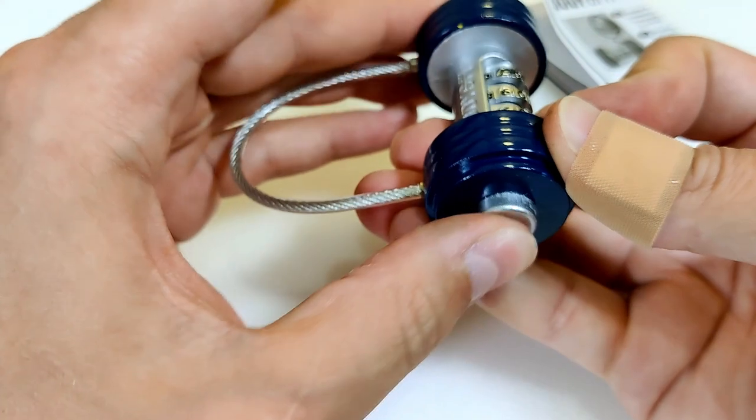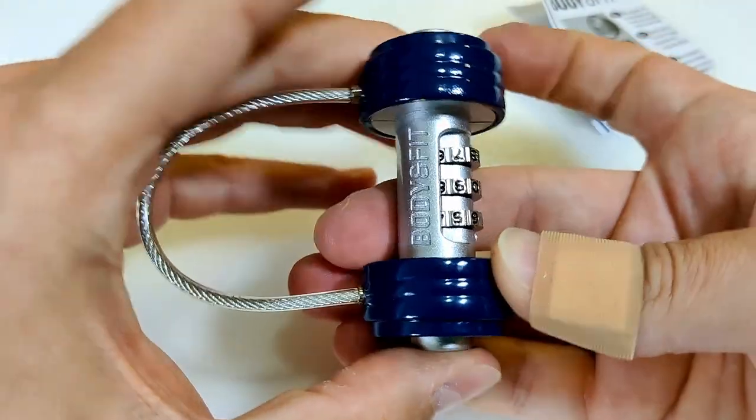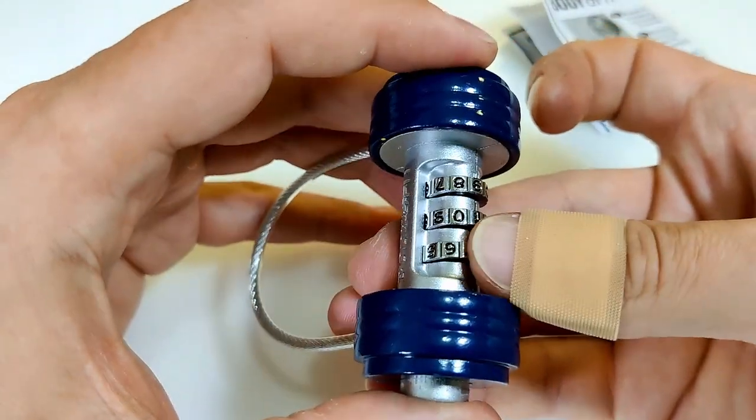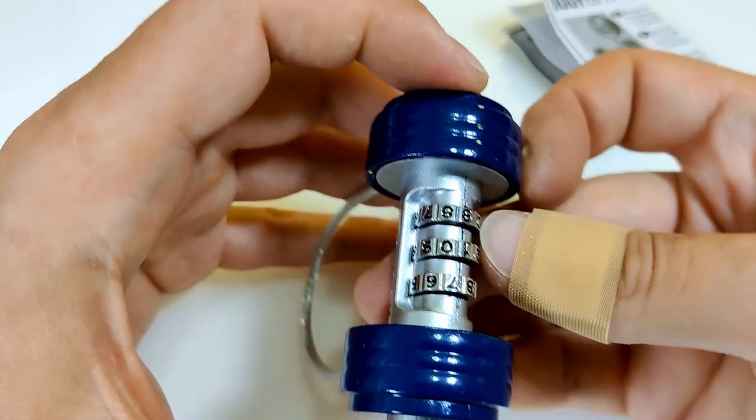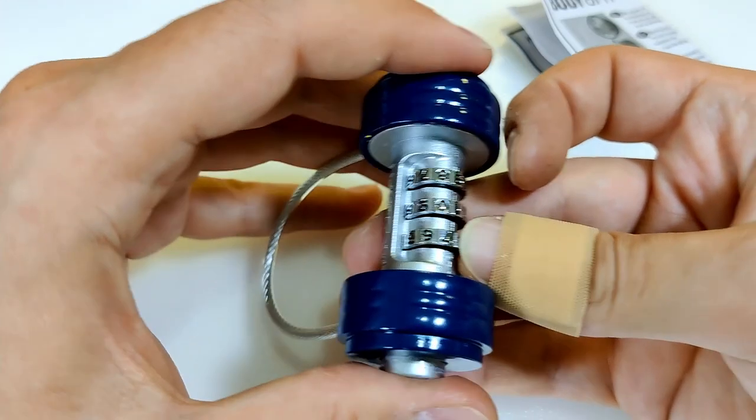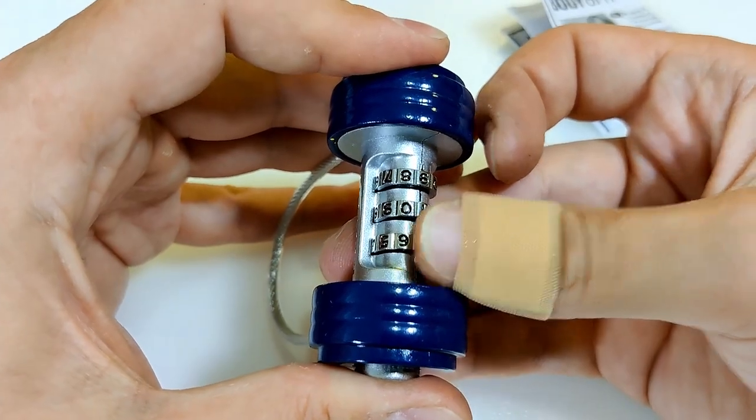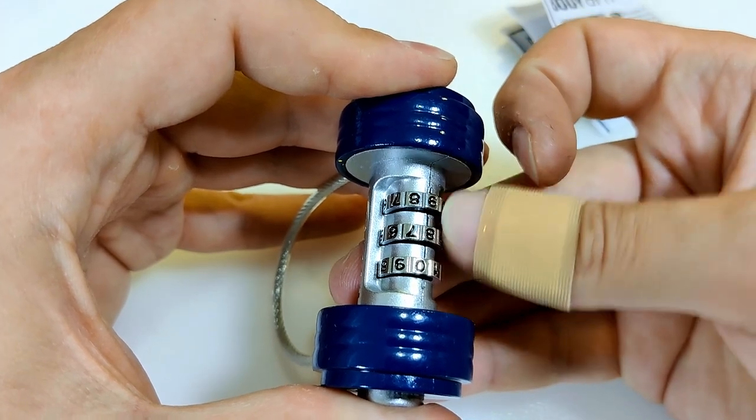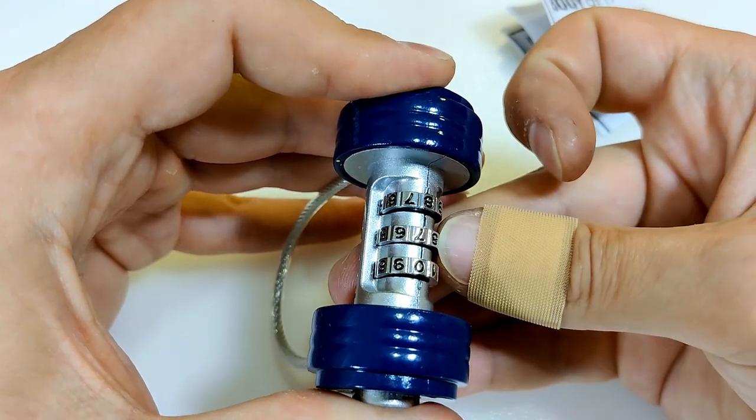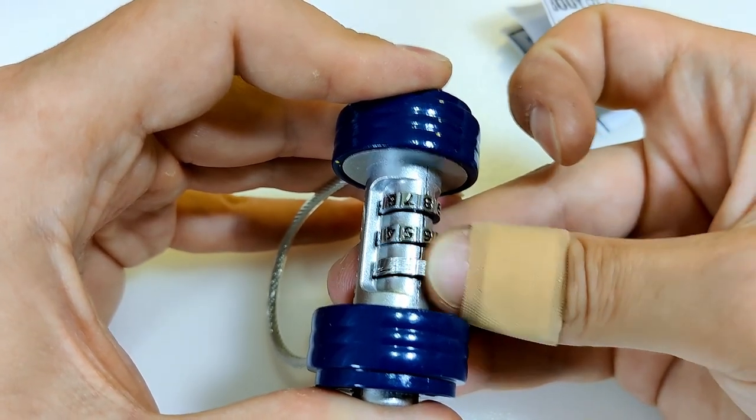You need to push this button to open it. The easiest way to open this one is with the indirect method, so you push the button and start turning. This is turning, this is turning, and the third one is not turning.